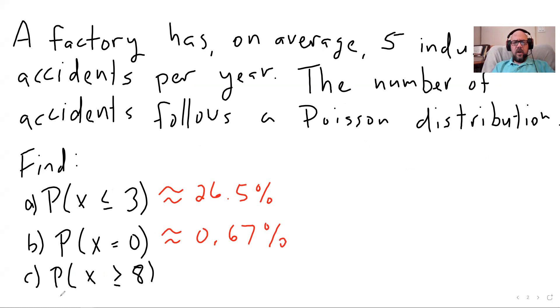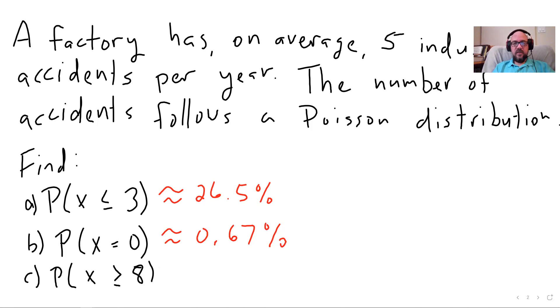All right. And then I want to know what's the probability that they have at least eight industrial accidents at this factory in a year, hopefully not too high because that's a lot of industrial accidents. Let's go look at it. So I'm going to do one minus CDF of seven here. So let's go see why we're doing that.